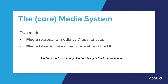Currently, the media system fundamentally has two purposes, and because it has two purposes, it has two core modules. The first module is called Media, and its job is to represent media as Drupal entities. This module has been in Drupal core as a stable module since 8.4.